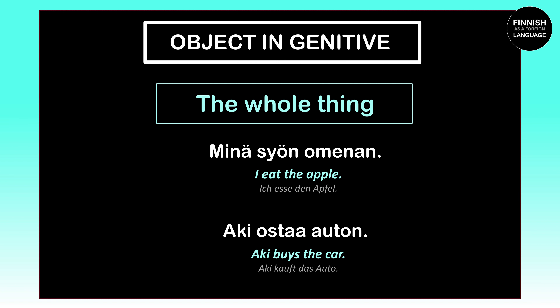Let's do another example: 'Aki ostaa auton' means 'Aki is buying a car.' Our object here is the car, which is 'auto' in Finnish. Since Aki is buying the car as a whole — not just part of it, but the whole car — we have to put the car into the genitive case. That is why 'auto' becomes 'auton.' 'Aki ostaa auton' means 'Aki is buying a car.'